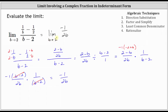I also want to show a shorter method by multiplying the numerator and denominator of the complex fraction by the LCD of 2b. Starting with the original expression again, we recognize the LCD of the numerator is 2b, so we multiply both the numerator and the denominator by 2b and then simplify.